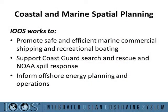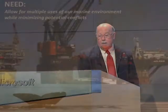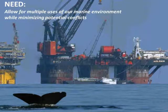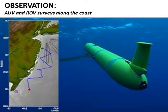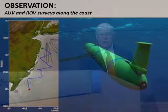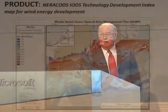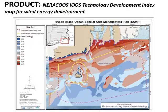Coastal and marine spatial planning — supporting all of these different operations to inform offshore energy planning and operations, which will allow for multiple uses of a marine environment while minimizing potential conflicts. Observations on the east coast using AUVs and ROVs survey the actual oceanic environment, and then a product using GIS technologies allows various users to access where the different types of legitimate utilization of the marine environment are best suited — in this case, wind energy extraction off the coast.